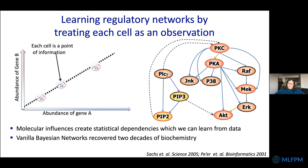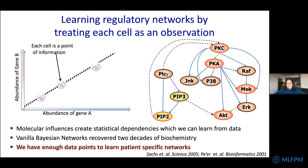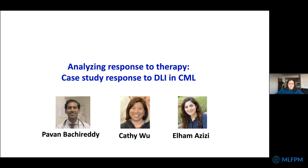This Bayesian network approach even predicted novel interactions between classical well-studied signaling proteins that were later validated to be true. The power is that we can look at each cell as an observation and learn these relationships from data. Now with all these new single-cell genomics technologies — droplet-based technologies — and the ability to measure thousands to millions of cells, we can actually learn networks from single-cell data and even collect 10,000 cells from a single patient to learn patient-specific networks.